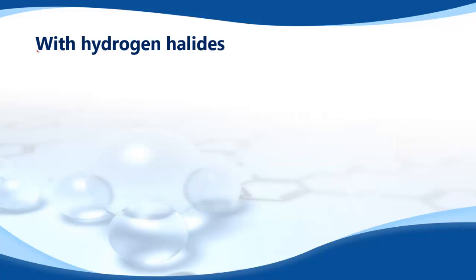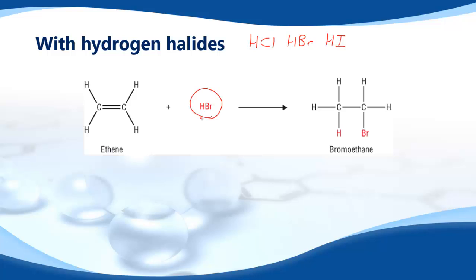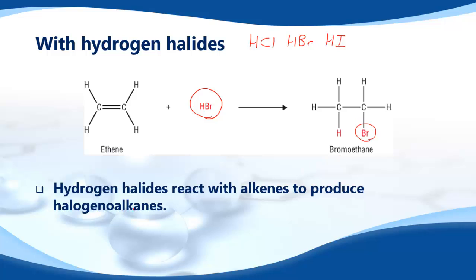Next is with the hydrogen halides. So hydrogen halides are things like HCl, HBr, or HI. So here we have ethene again, here we have HBr, and the product is bromoethane. There's the bromine atom. It's a halogeno alkane, bromoethane. So hydrogen halides react with alkenes to produce halogeno alkenes.